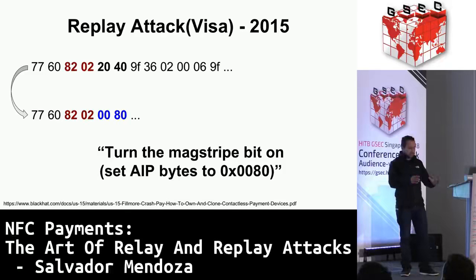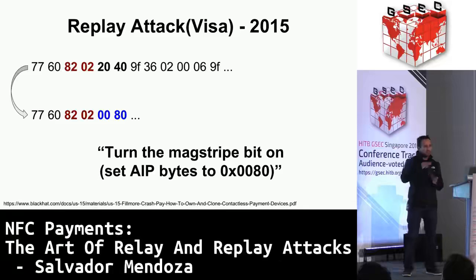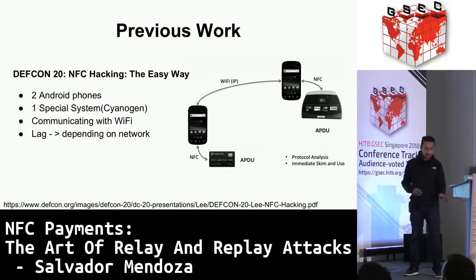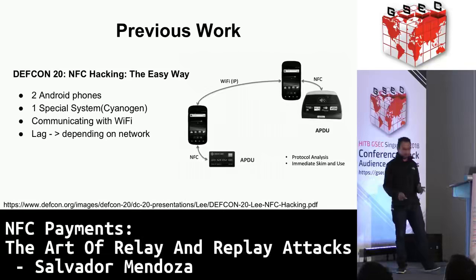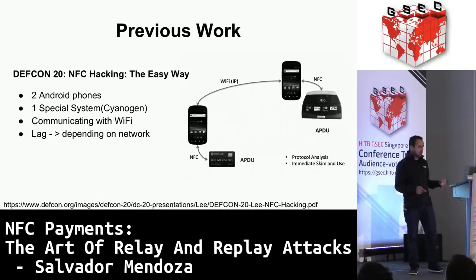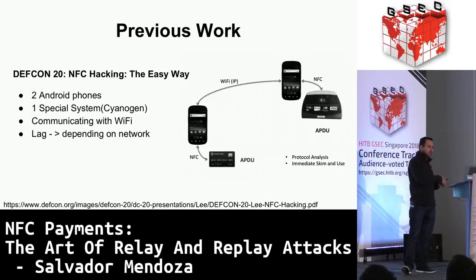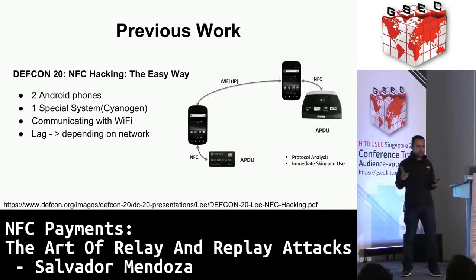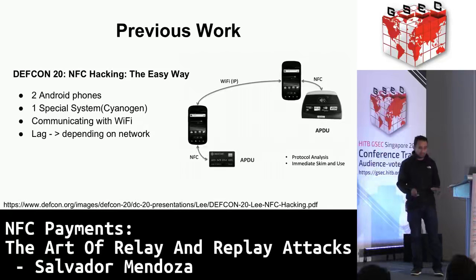What Fillmore did was basically when you have a level of security in NFC, when you reduce this bit, you tell the terminal to lower the security and the transaction just validates the smart card information. On the hardware side, Mr. Lee presented NFC hacking the easy way at DEFCON 20 about how he used two Android phones to make a bridge between the smart card and the terminal. You put one cell phone close to a smart card and another close to a terminal, and they communicate using Wi-Fi. When the terminal sends a command to the phone, the phone sends it via Wi-Fi to another phone which forwards it to the smart card, bridging the transaction back and forth. One limitation was lag depending on the network, and some of the systems they implemented are no longer available.